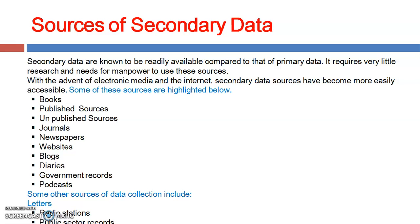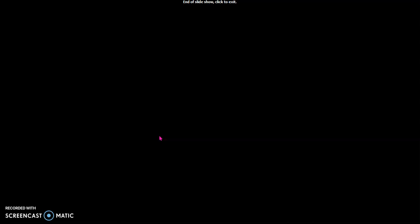Government records are another important source — governments of different countries publish reports in different categories such as economic environment, agriculture, education, and health. You can access data from government agencies that are publicly published. Other sources of secondary data include radio stations and public sector records, which in the past were significant for data collection before television and internet facilities.